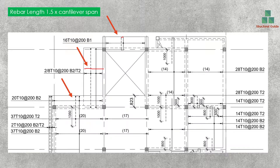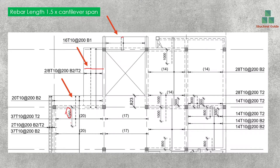When a cantilever slab is discontinued, you have to provide the reinforcement carefully for that portion. As a rule of thumb, the top reinforcement shall continue at least 1.5 times the cantilever length into the supporting slab. You may adjust this value depending on the bending moment diagram, but this rule of thumb must be kept in mind when doing cantilever slab reinforcement detailing.